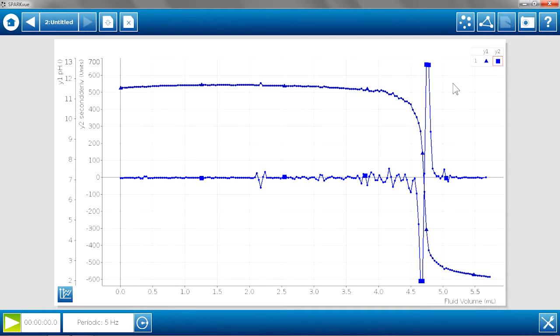The pH's equivalence point should be right around 7, because it was a strong acid, strong base. And the second derivative shows that by showing you where the plot crosses the 0. So we see a nice indication of the equivalence point using that second derivative.